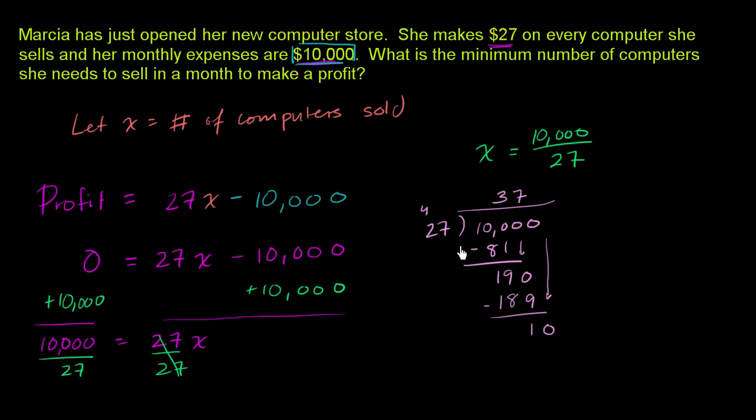We have a 0 right there. 27 goes into 10 how many times? Well, it doesn't go into 10 at all. Put a 0 right there. 0 times 27 is 0. Then we subtract, and then we get 10 again. And now we're in the decimal range.